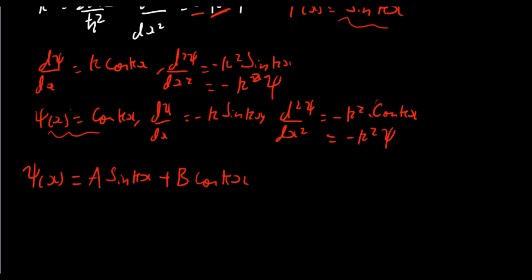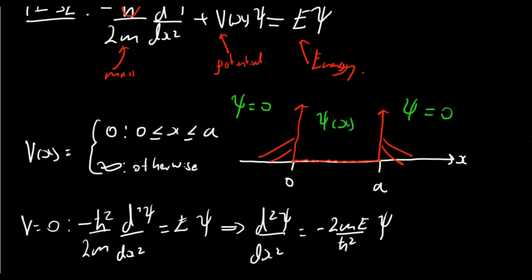Now that we have a general form of our wave function, we want to find a particular solution corresponding to the physical case. We need boundary conditions to determine the arbitrary constants A and B. We know that psi is equal to zero outside the region from zero to a, and we require psi to be a smooth continuous function, so psi must be equal to zero right at the boundaries.